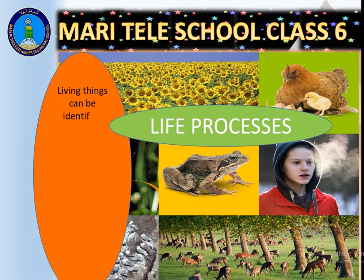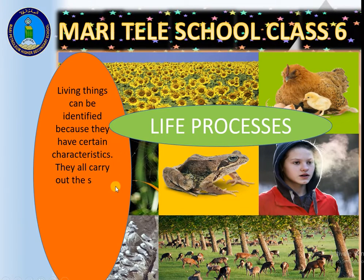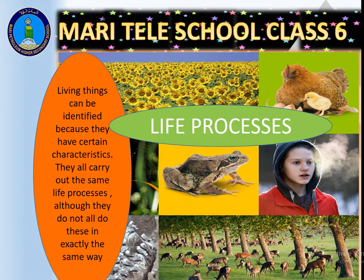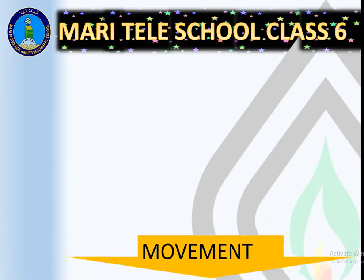Living things can be identified because they have certain characteristics. They all carry out the same life processes, although they do not all do these in exactly the same way. They carry out these processes differently, but they share the same characteristic properties because they are all living. Let's look at them one by one.